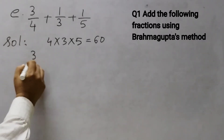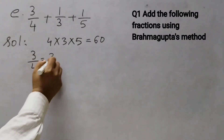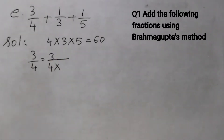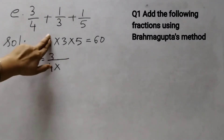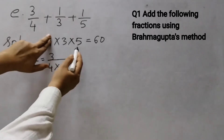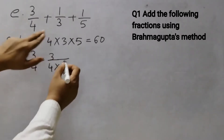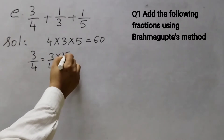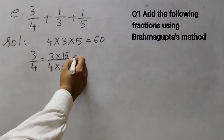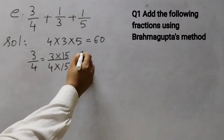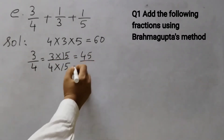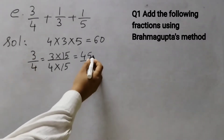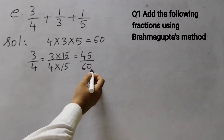First we will take 3/4. What number do I multiply here? Hide 4 — what do you get? 3 × 5 = 15. So 4 × 15 gives the denominator. Multiply the numerator by 15 also: 3 × 15 = 45, 4 × 15 = 60. So 3/4 has become 45/60.